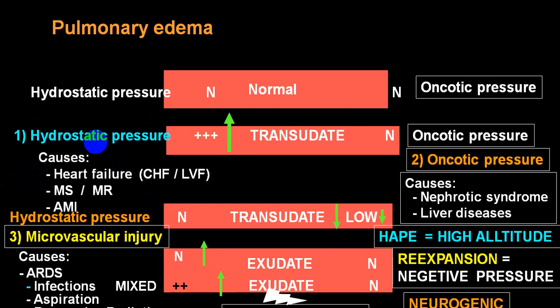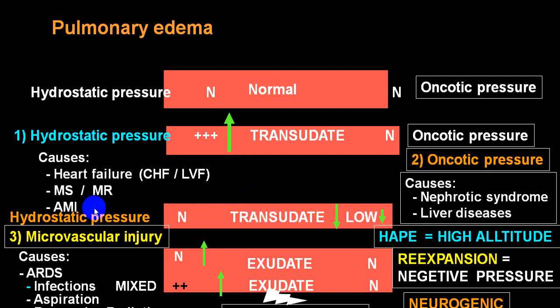Decreased oncotic pressure — as in nephrotic syndrome, severe liver disease like cirrhosis, malnutrition such as kwashiorkor or marasmus, GI tract malabsorption syndrome, or protein-losing enteropathy — leads to fluid filtration. If hydrostatic pressure is increased, fluid filtration occurs from the arterial side. If oncotic pressure is decreased, the difference between hydrostatic and oncotic pressure increases, producing extra transudation of fluid even when hydrostatic pressure is normal.